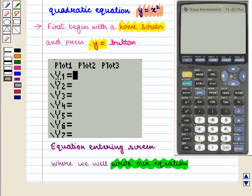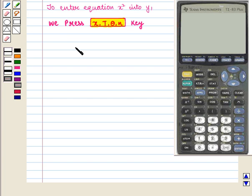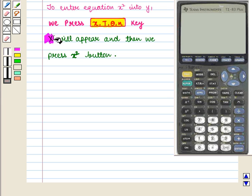We enter X squared into Y1. For this we press the X, T, theta, N key. X will appear and then we press the X squared button.